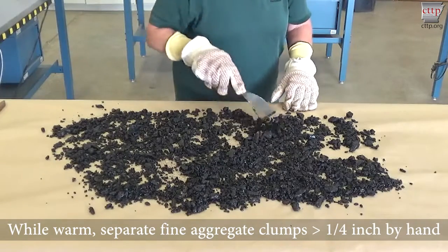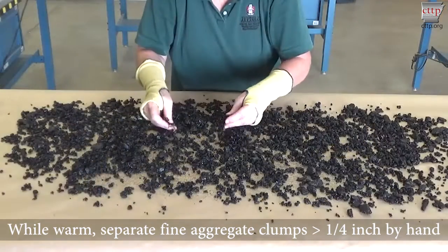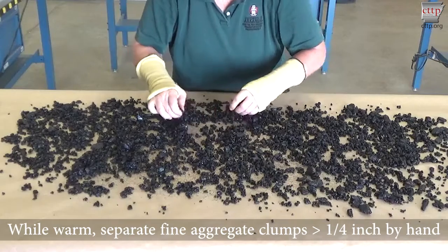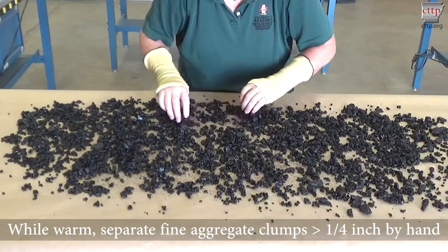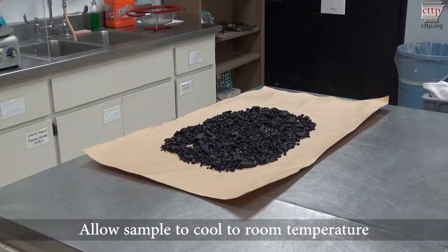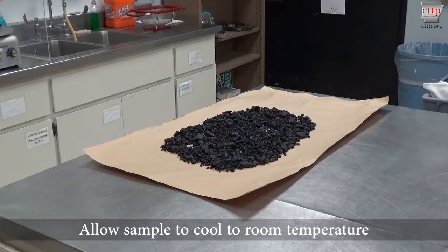While still warm, separate the fine aggregate clumps by hand until there are none greater than a quarter of an inch in size. Allow the sample to cool to room temperature.